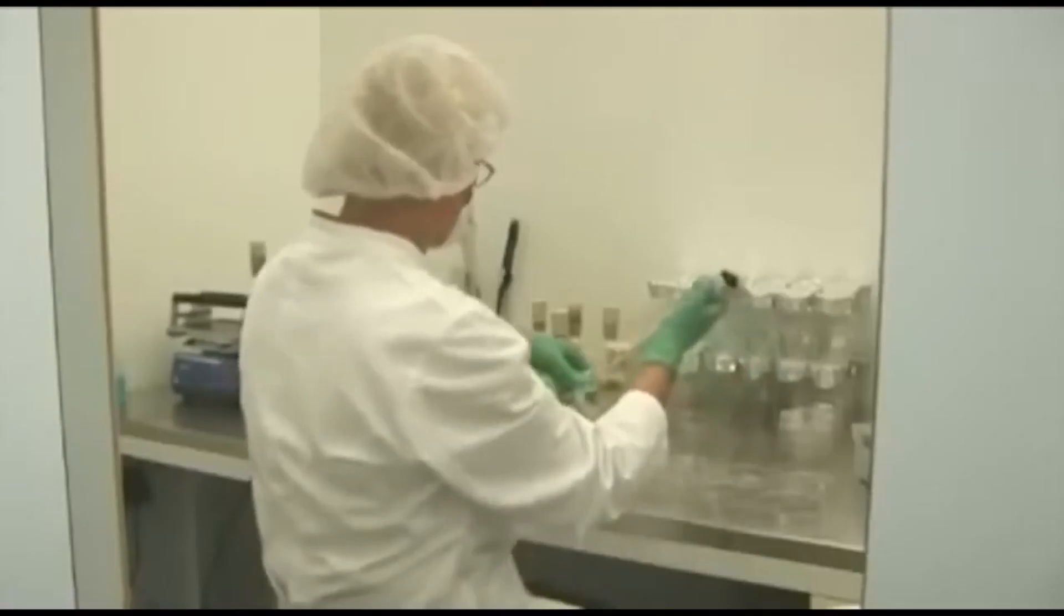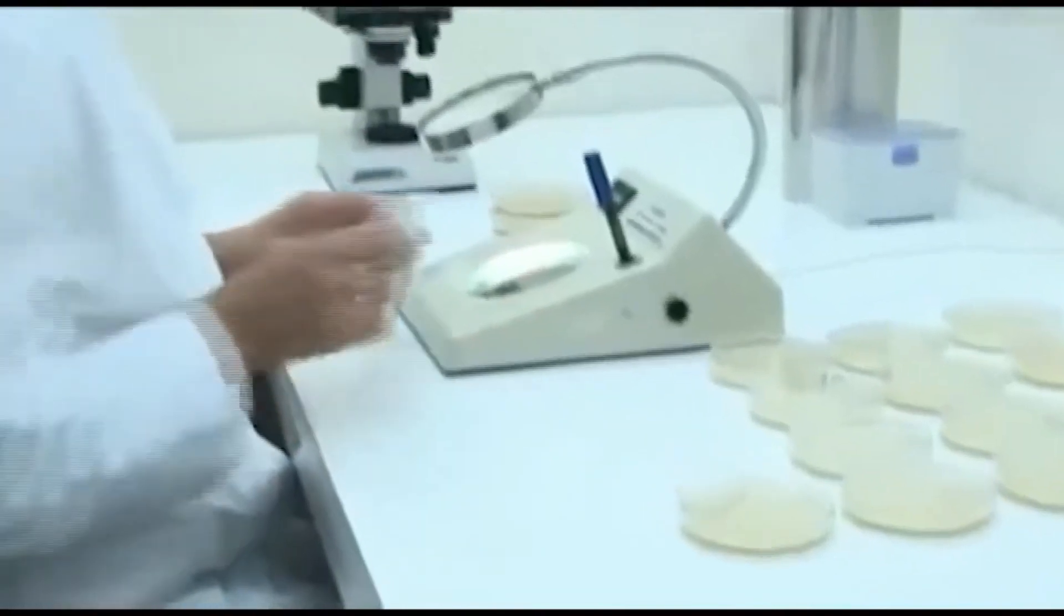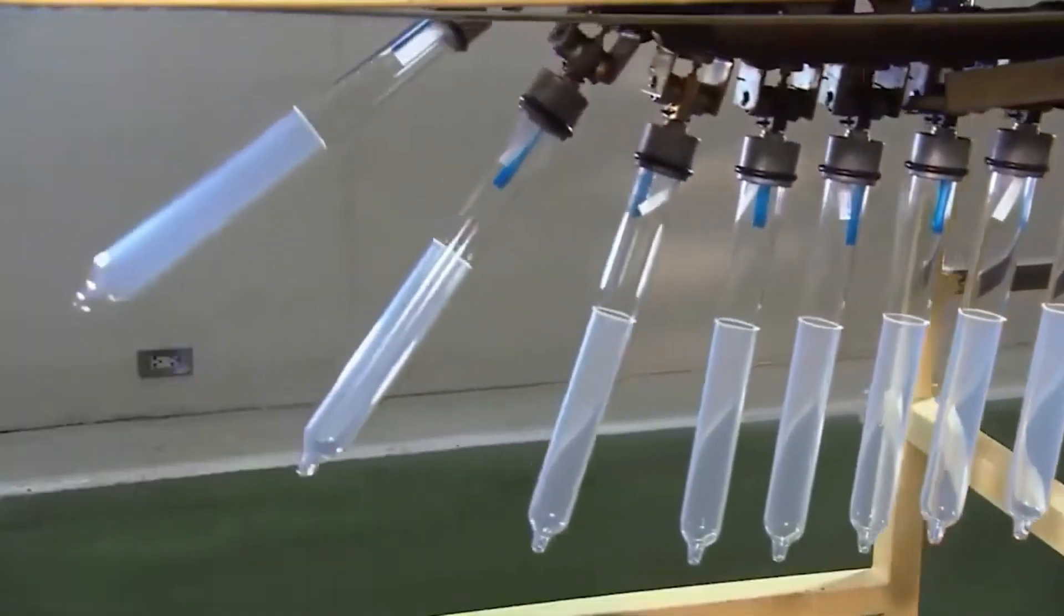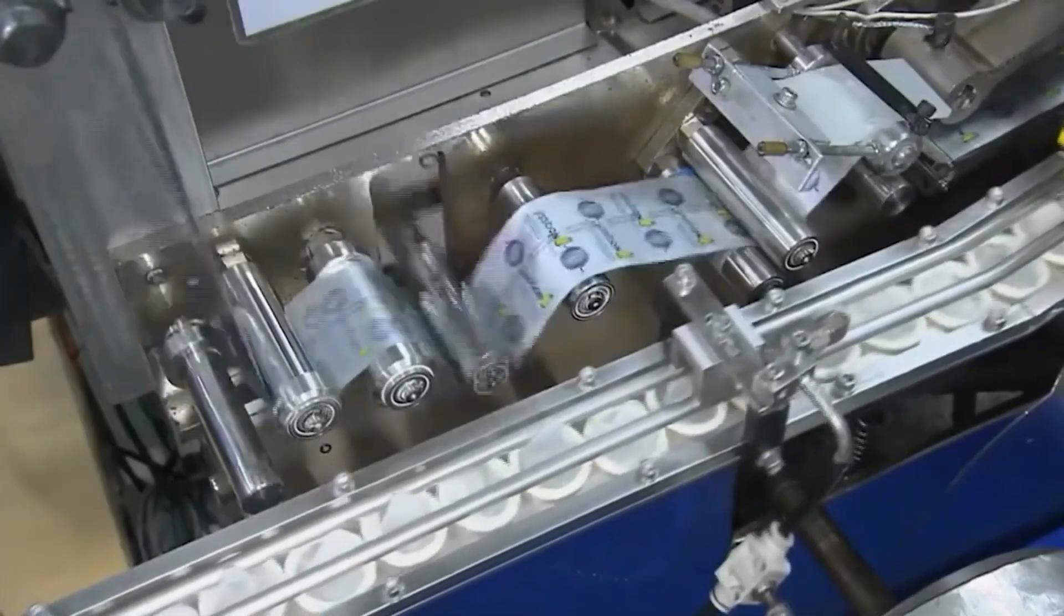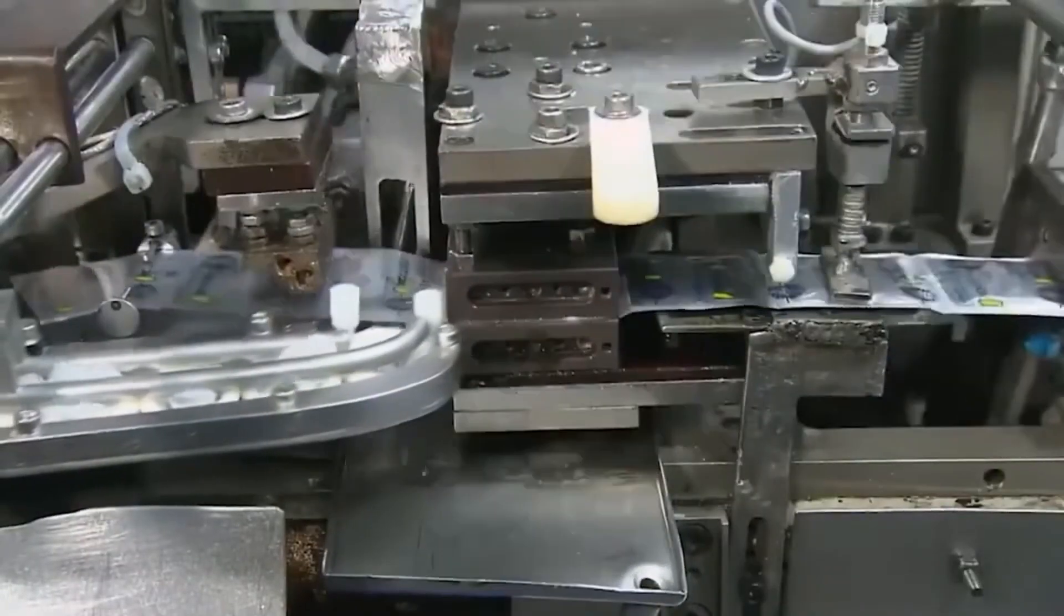Finally, the concluding step in the manufacturing process entails each condom undergoing meticulous inspection under a microscope by a healthcare professional, ensuring they are free of germs. If even one condom in the batch proves faulty, the entire lot is discarded. However, if they pass these tests with flying colors, it's onward to the packaging phase.